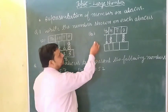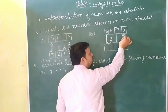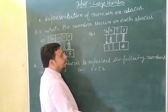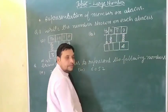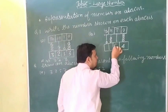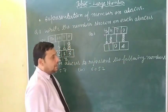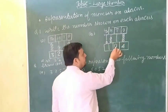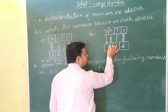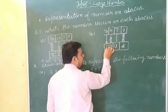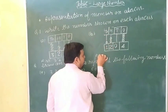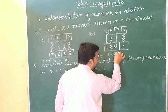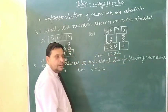Next question. Ones place par: one, two, three, four — box mein four. Tens place par ek bhi nahi hai — zero. Hundreds place par? Zero. Hundreds place par two. Thousands place par one. Answer: one, two, zero, four — 1204.